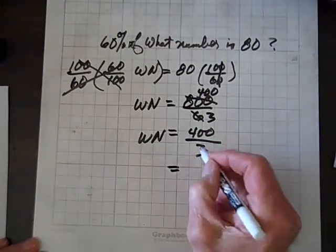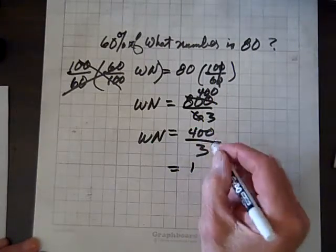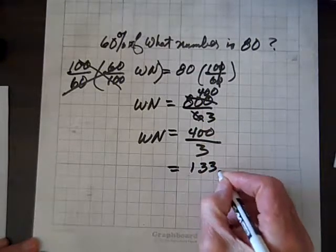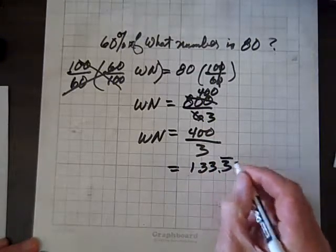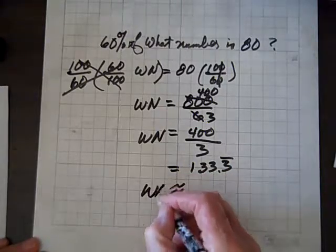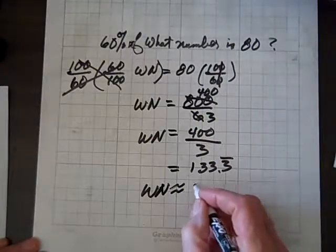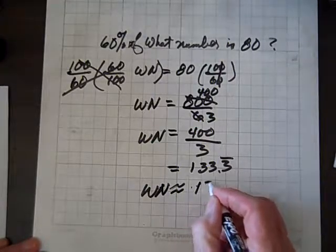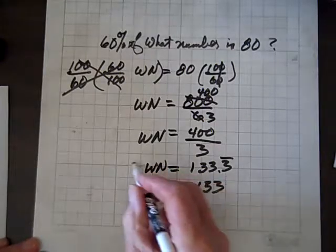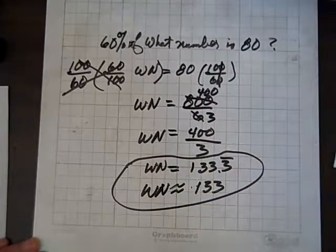And 3 goes into 4 once, and 1 left over, so 3 into 100 goes 33.3 repeating. So we'll round that to WN equals, well, approximately 133. If we want the exact value, we'll pick the top guy. If we want to approximate, we'll pick the bottom.